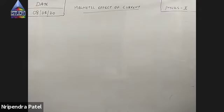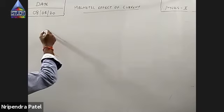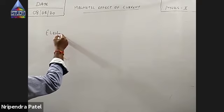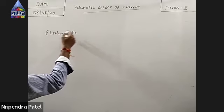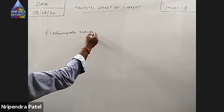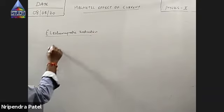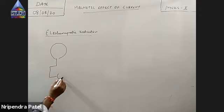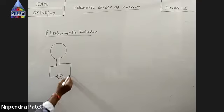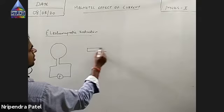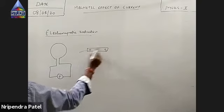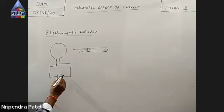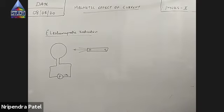So, come on guys, we started magnetic induction. The topic we will do is electromagnetic induction. Last time, we took a coil connected to a sensitive galvanometer and brought a magnet close to it. What we observed was that there is some current flowing in the coil.